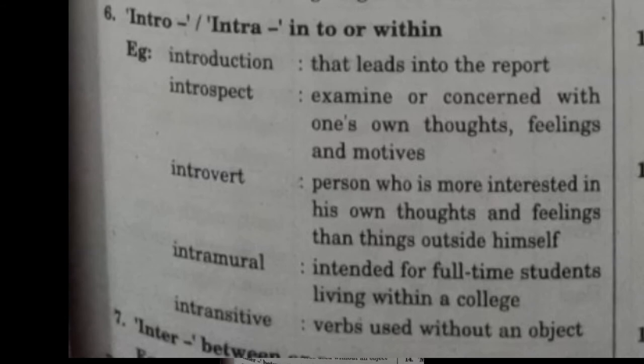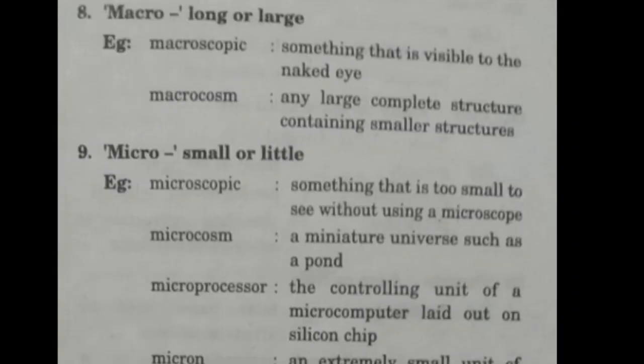'Inter' means in between or among. The next prefix is 'macro,' meaning long or large — for example, 'macroscopic' (something visible to the naked eye). 'Micro' is the opposite of macro, meaning small or little — for example, 'microscopic' (something too small to see without using a microscope).